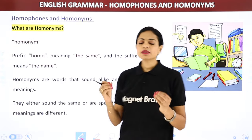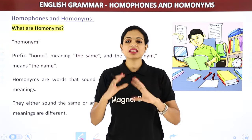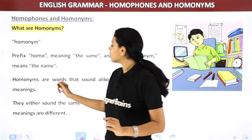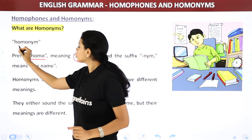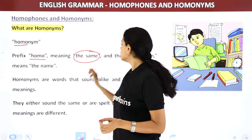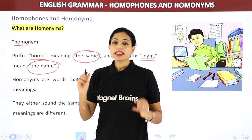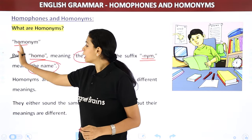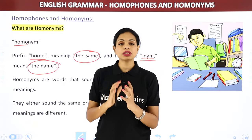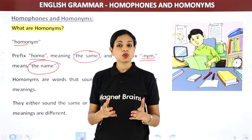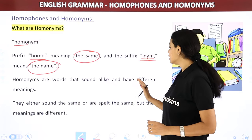What are homonyms? The prefix 'homo' means 'same,' and 'nym' is a suffix meaning 'name.' So homonym means 'same name.' These are words where either the spelling is the same or the sound is the same. So homonyms are words that sound alike and have different meanings.